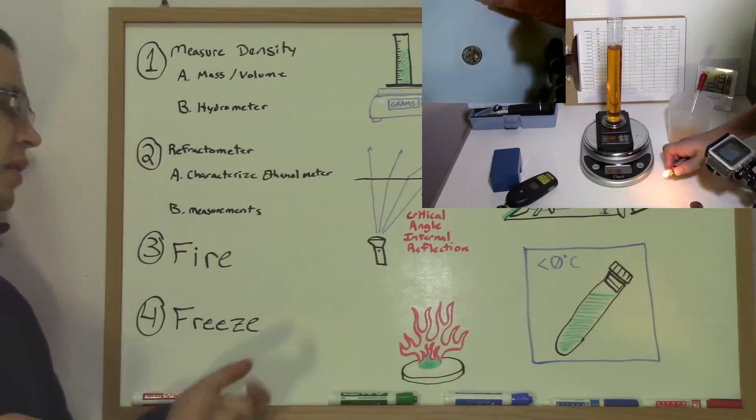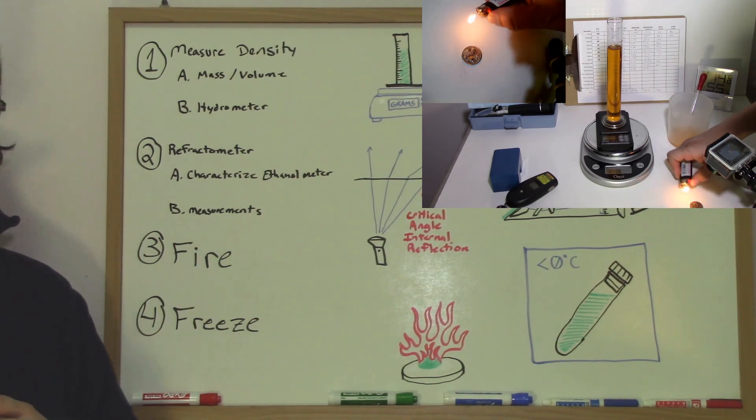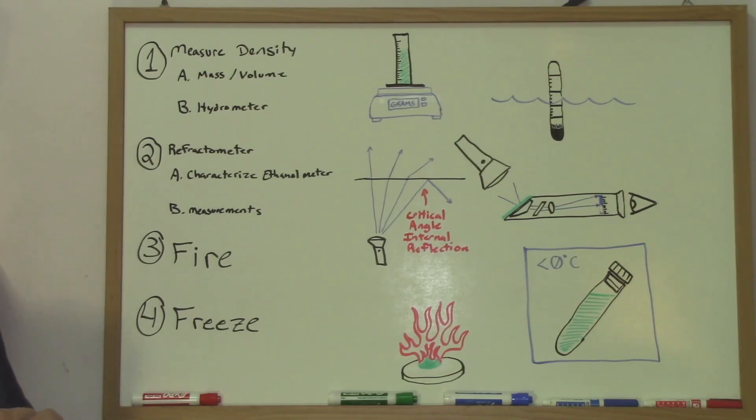Then see if it re-lights. We use the flint to light the sample, and if the sample is burning, it should be able to light the lighter when I hit the gas on the lighter.